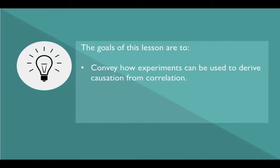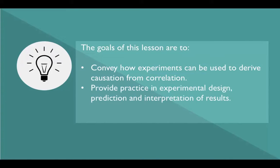The goals of this lesson are to convey how experiments can be used to derive causation from correlation, provide practice in experimental design, prediction, and interpretation of results, and highlight the limitations of Koch's postulates.